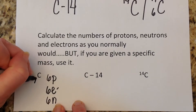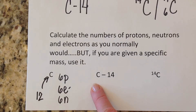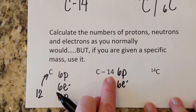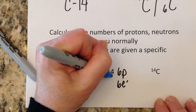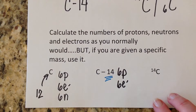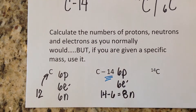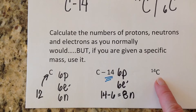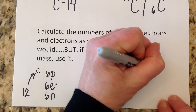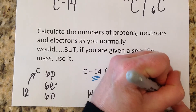For carbon-14, it's still carbon, so it still has 6 protons and 6 electrons. But they are specifically telling you they're talking about the isotope carbon-14. When they give you a specific mass, use it to calculate your number of neutrons. So 14 minus 6 is 8 neutrons. Likewise, in nuclear notation, the mass is to the upper left — you do it the same way: 14 minus 6 is 8 neutrons.